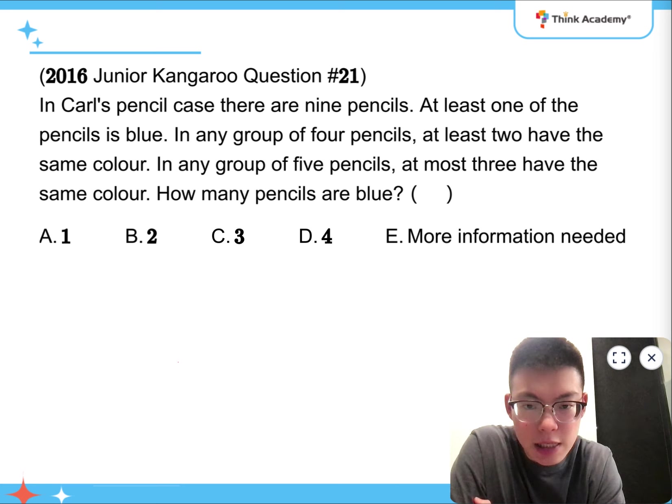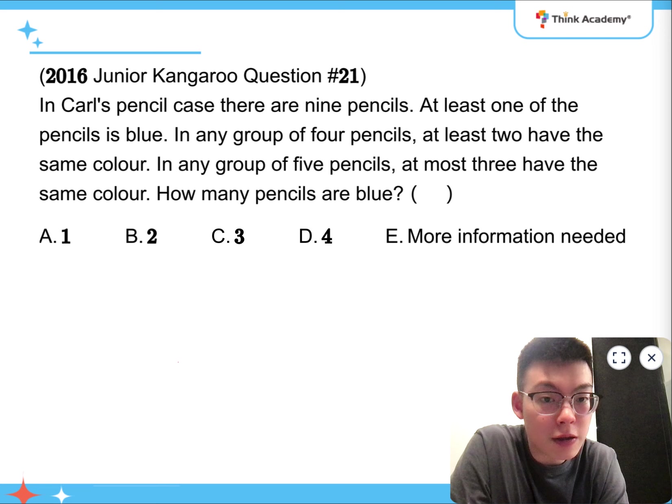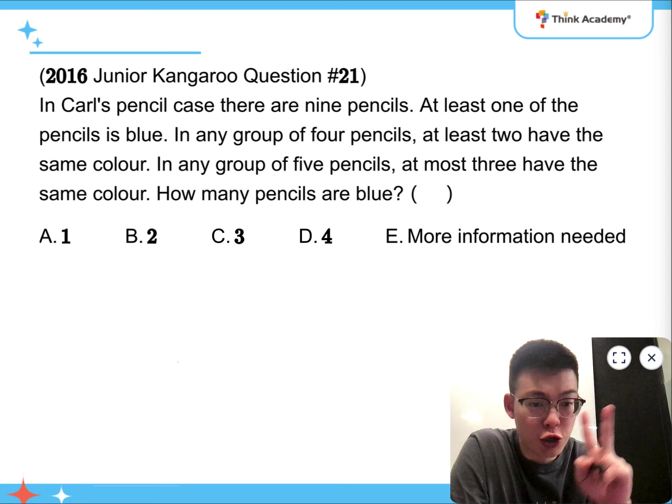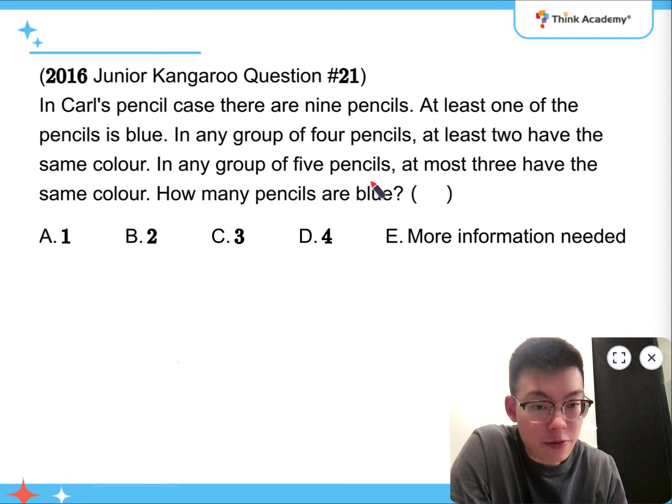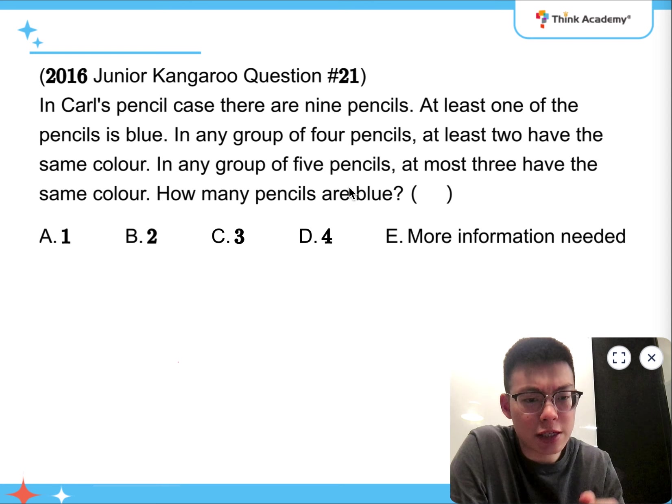So, question 21. It says that in Carl's pencil case there are 9 pencils. At least one of them is blue, and in any groups of 4 pencils, at least 2 have the same color. In any groups of 5 pencils, at most 3 have the same color.